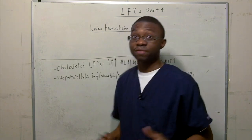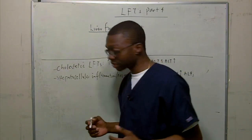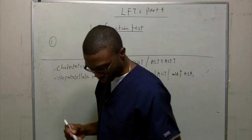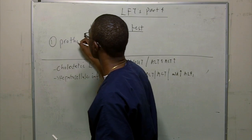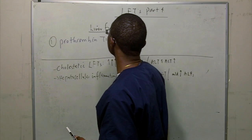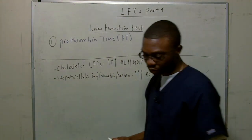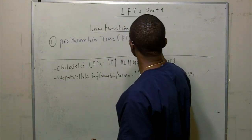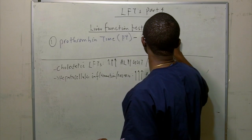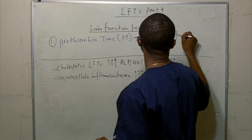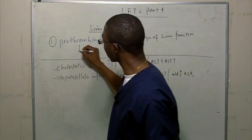So how do we know if the liver is still functioning or not? We check the liver function test. The most important test you need to know is the prothrombin time, or PT, which is the primary indicator of whether the liver is still functioning. If your liver is still functioning, it should still be producing factors 1 and 2.